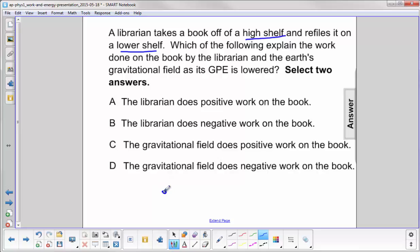Let's draw a picture. And by picture I mean free body diagram. As the book is being lowered, gravity is always acting in a downward direction. So that's mg.